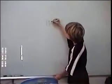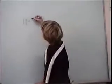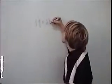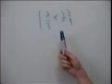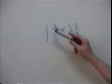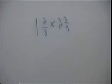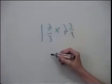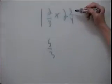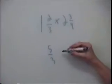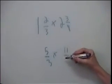1 and 2 thirds times 2 and 3 fourths. Like the ones we did before, they look hard, but they're very easy. So what we have to do is convert them into an improper fraction. So how you do that is you go 3 times 1, so that's 3 plus 2, equals 5. And then you do 5 over 3. Now for this one, 4 times 2, 8 plus 3, 11. So 11 over 4.